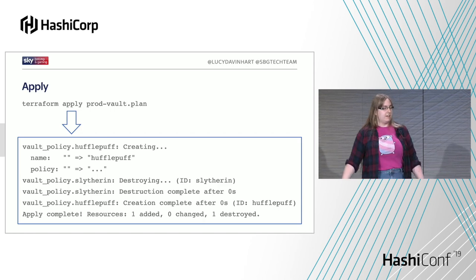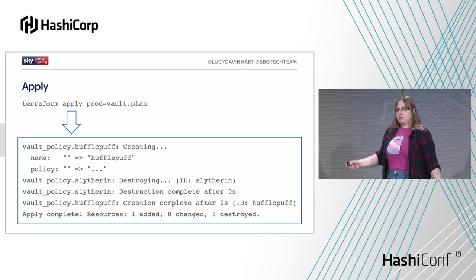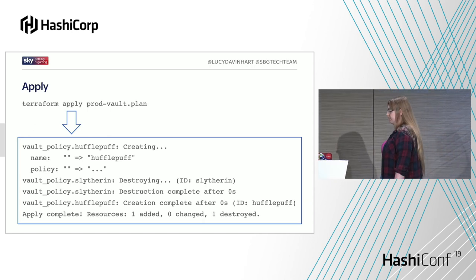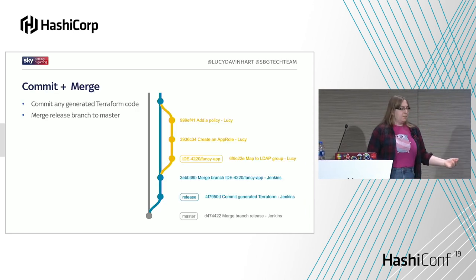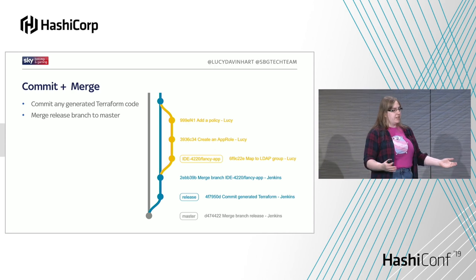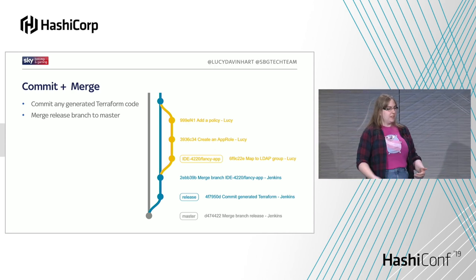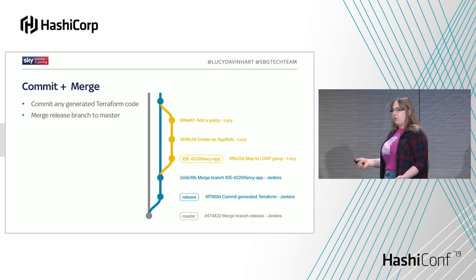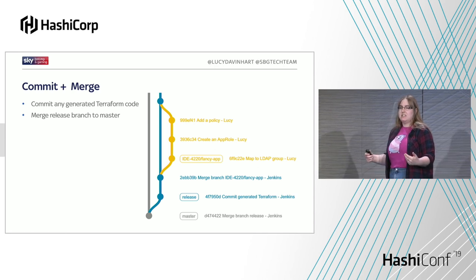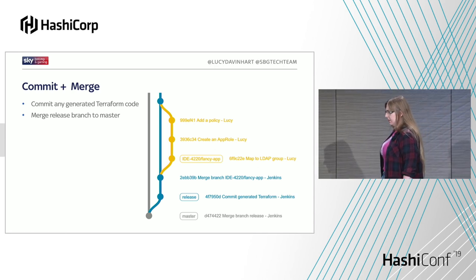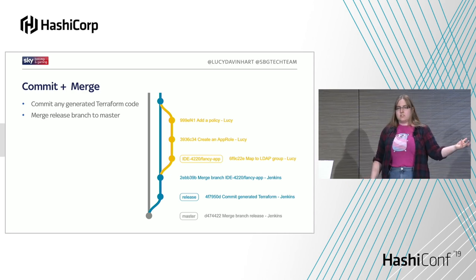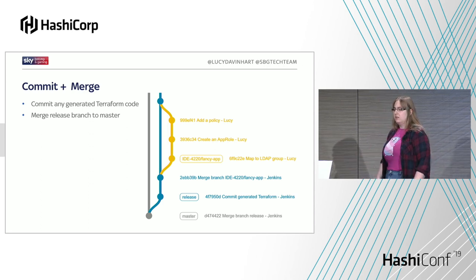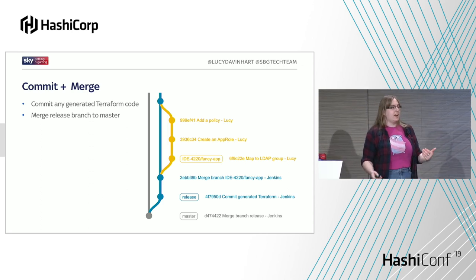We give Jenkins that secret ID and it goes ahead and applies those changes using the plan file generated earlier. This is so quick that in the time it's taken me to explain it, it could have done it ten times over. Finally, we do a little cleanup in our repo — we take all the generated Terraform code and commit it back to the repository. We don't really need to do this, but it's nice to have it around permanently. We also merge the release branch — where we keep track of things we want to be live — into master, where we keep track of things that are live.